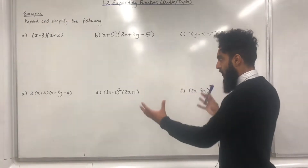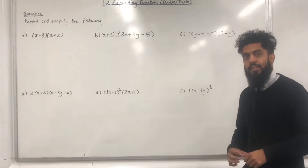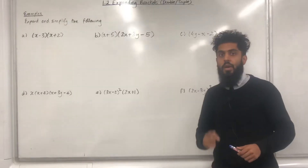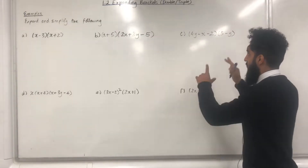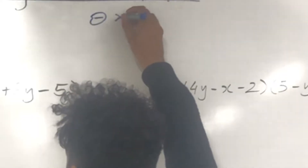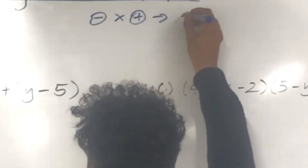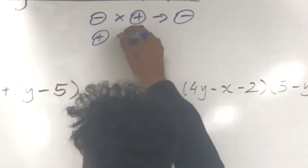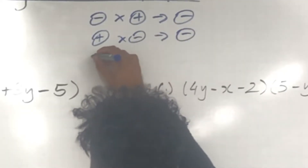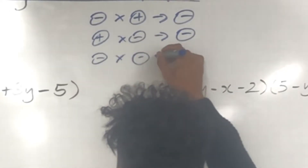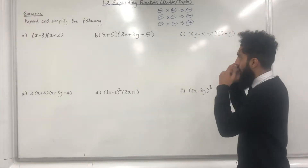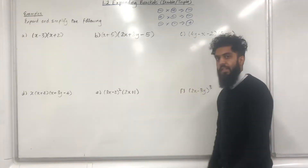Before I cover some examples on expanding and simplifying brackets, I would like to quickly recap something very important from my previous video, 1.1. A negative multiplied by a positive gives us a negative. A positive multiplied by a negative gives us a negative. Two negatives multiplied together gives us a positive. This is essential for what I'm going to be covering in this video.